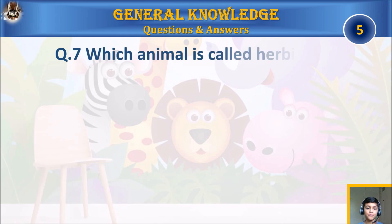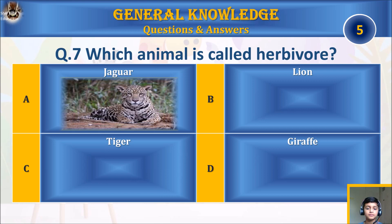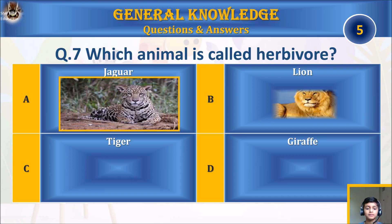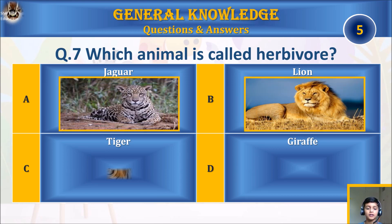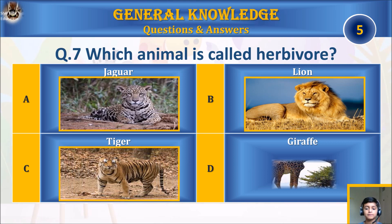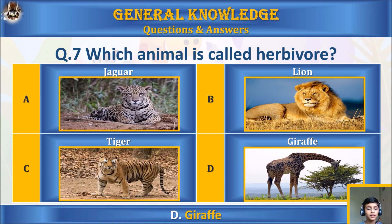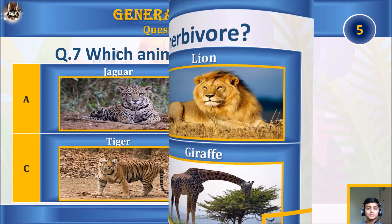Question seven: which animal is called a herbivore? A) jaguar, B) lion, C) tiger, or D) giraffe? Your time starts. The answer is D) giraffe.